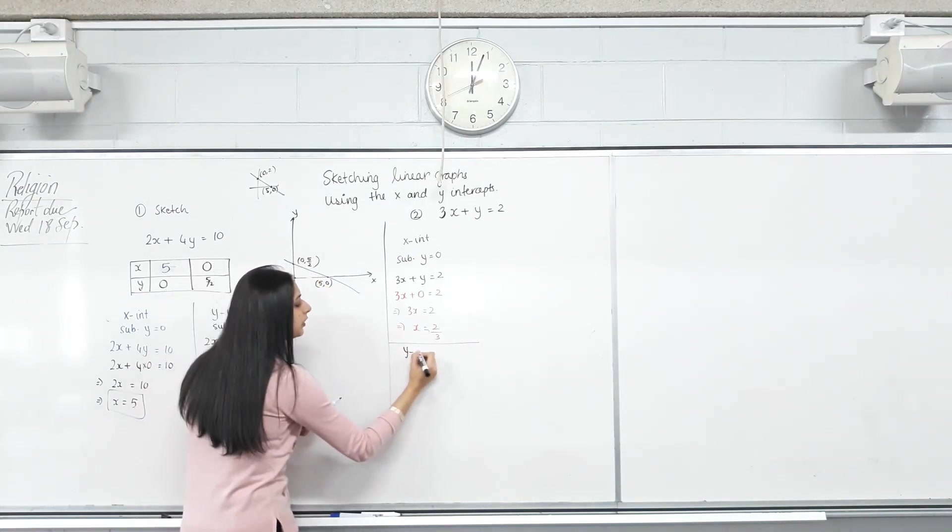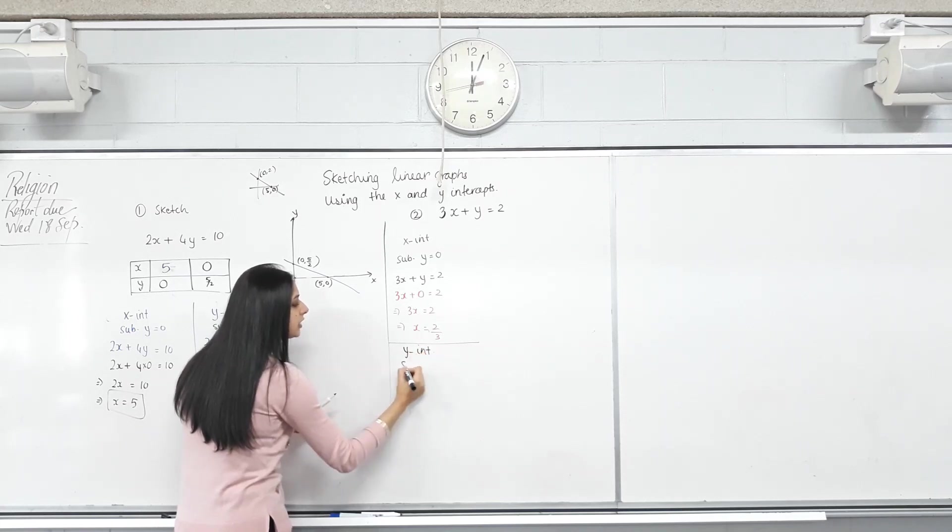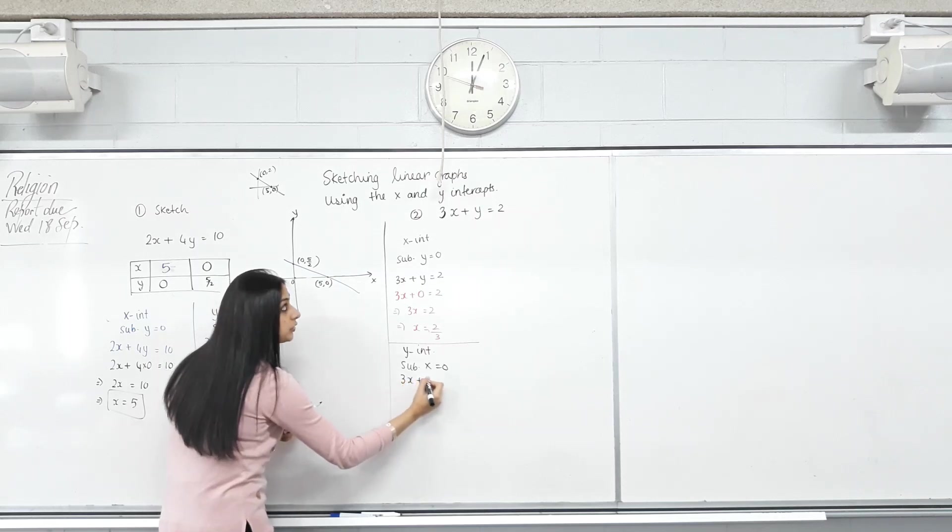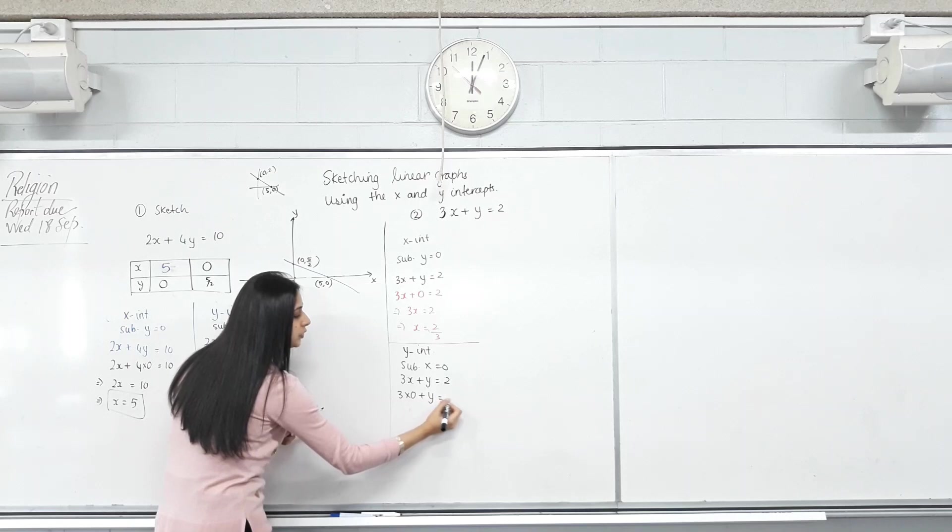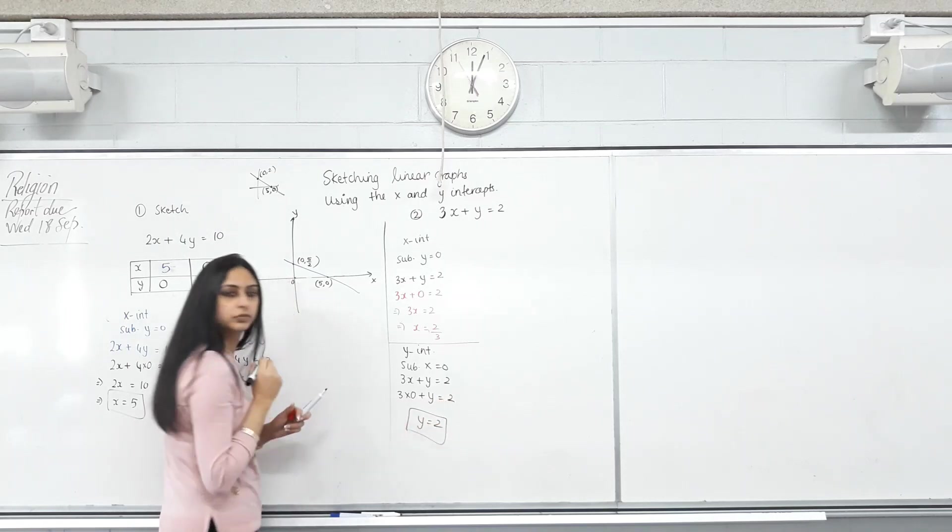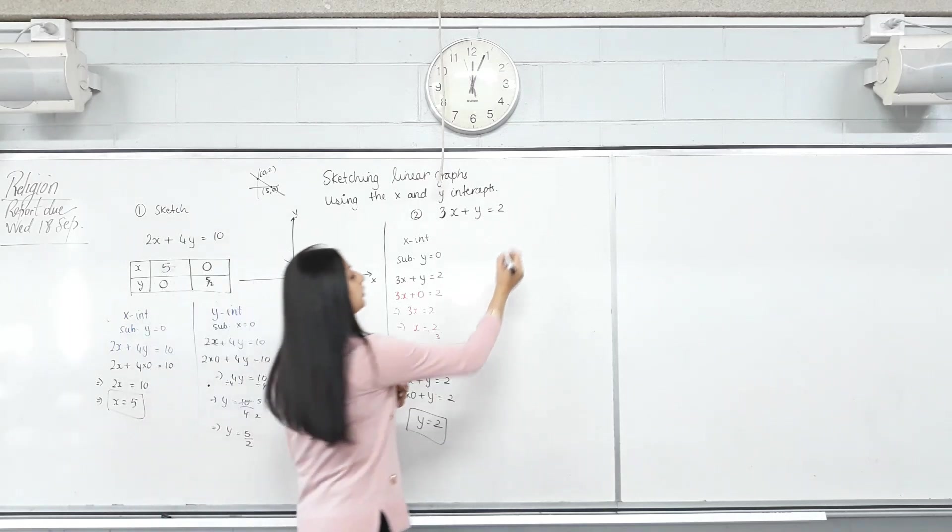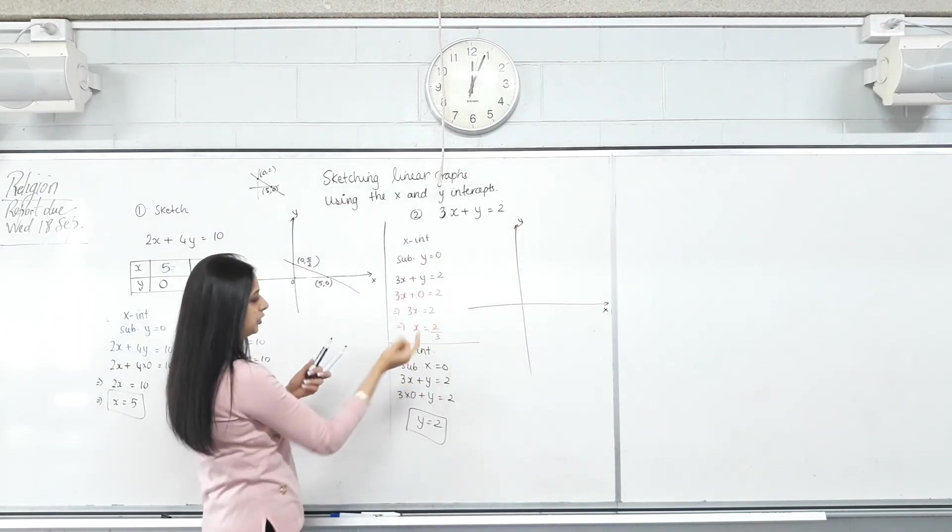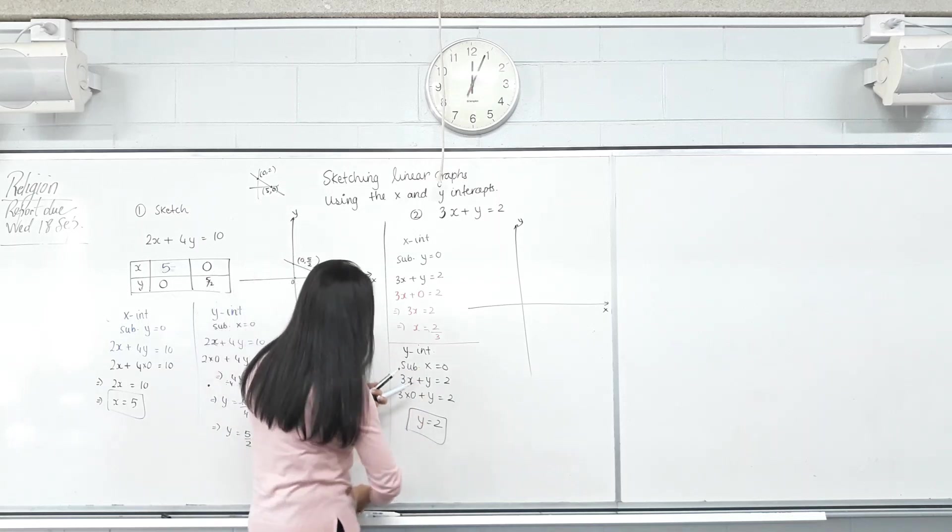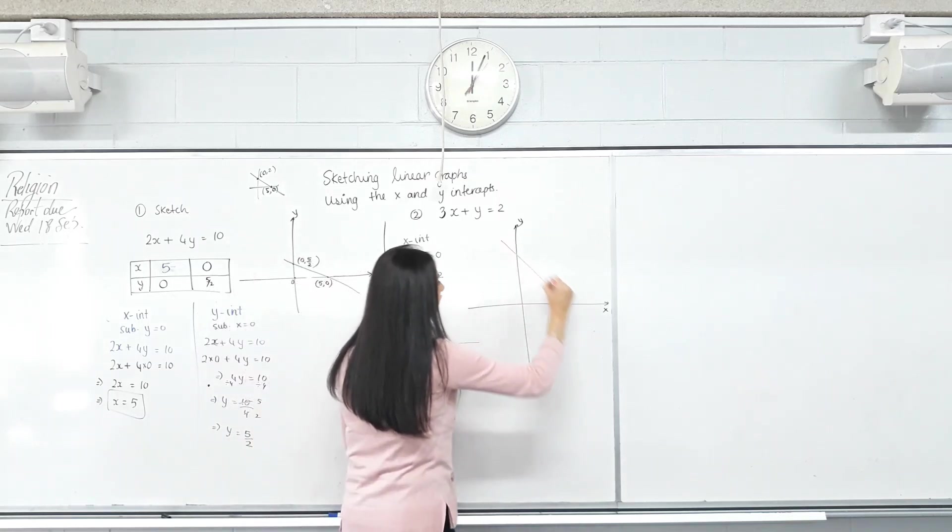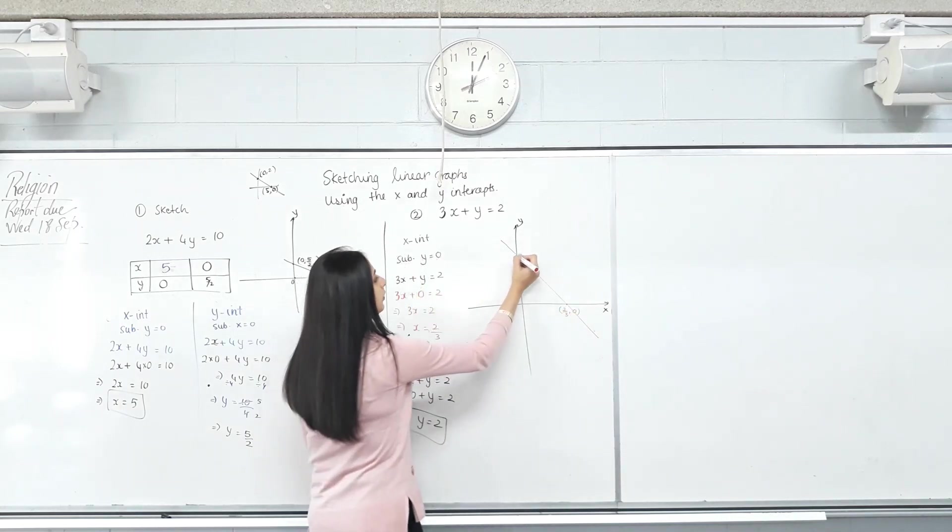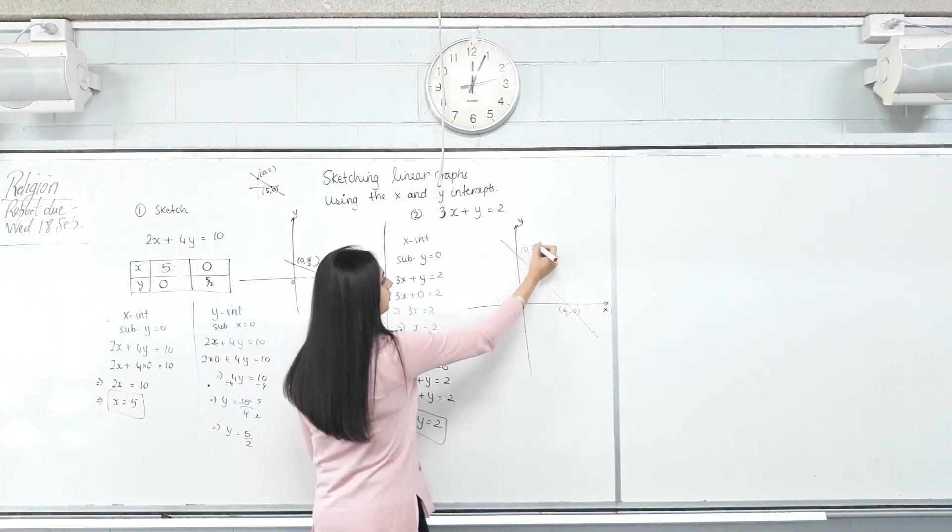Now, let's find the Y intercept. What do I sub X equal to? 0. So in that equation, copy the equation first. 3 times 0 plus Y equals 2. That gives me Y equals 2. You don't even need a table. Just do that. X is 2/3 and Y is 2. So X is 2/3 comma 0, and Y is 0 comma 2. That's it.